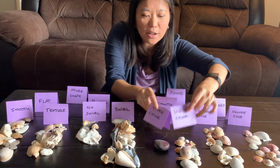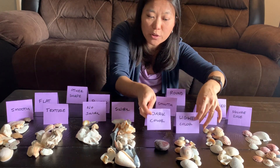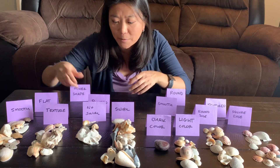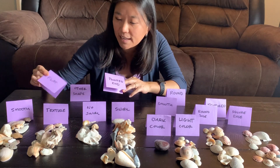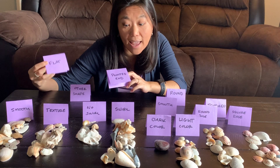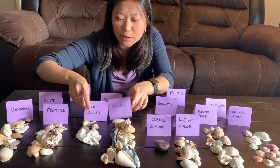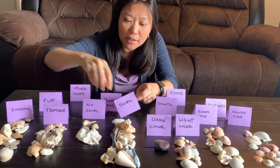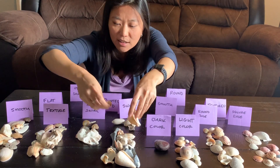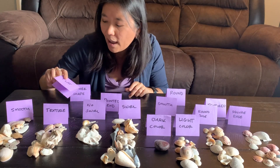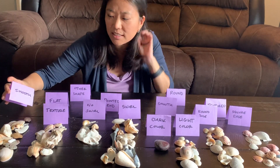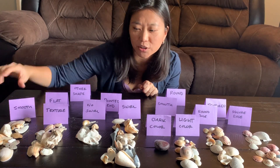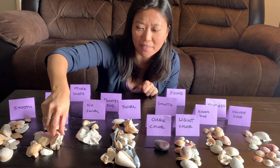Over here we looked at which ones were light color and which ones were dark color. With our other shaped shells we were able to organize them into ones that were flat on the ends or pointed. We organized the pointed ones by which ones had a swirl pattern or which ones had no swirl. On my flat-ended shells we organized them into ones that had a smooth texture or ones that had bumpy textures on them.